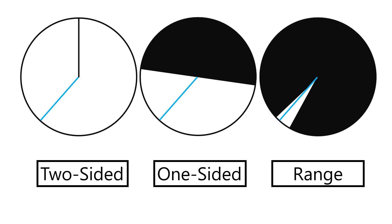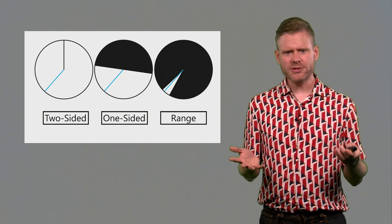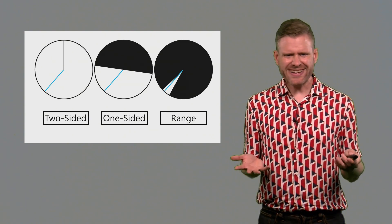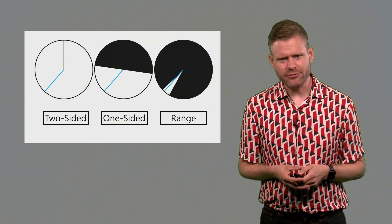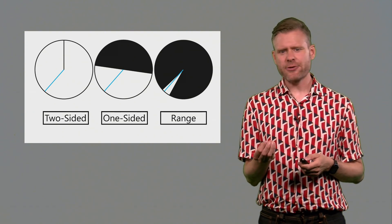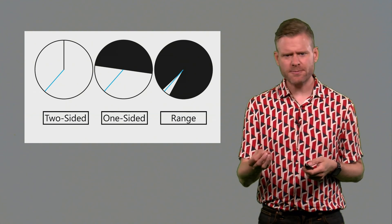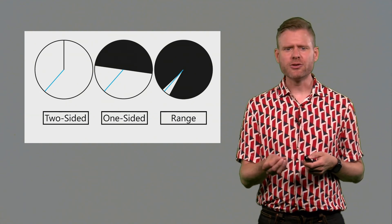Let's take a look at three questions that researchers can ask and evaluate these in terms of how risky they are. We will look at a two-sided hypothesis, a one-sided hypothesis and a range prediction. In each of these scenarios, the circle represents all possible outcomes. The white area represents the values that are predicted under the alternative hypothesis. And the black area represents the values that are not predicted or part of the null hypothesis.